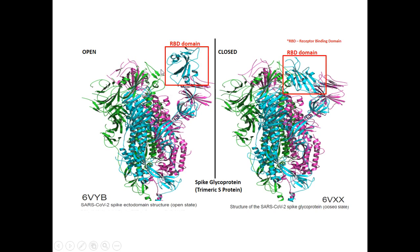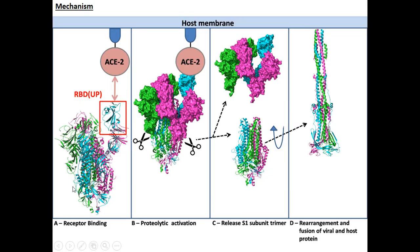This RBD domain is important for interacting with human cells, and that's why researchers work on the spike glycoprotein - because this protein is directly involved in interacting with human cells. When it is in the closed state it does not interact with the human cell, but when it comes to the open state it has the possibility to bind with the human ACE2 receptor. Both states have the same sequence, but in the open state the RBD domain is in an up orientation and in the closed state the RBD domain is in a down orientation.